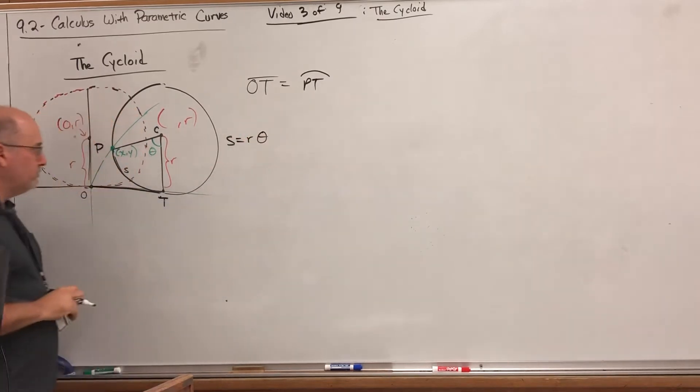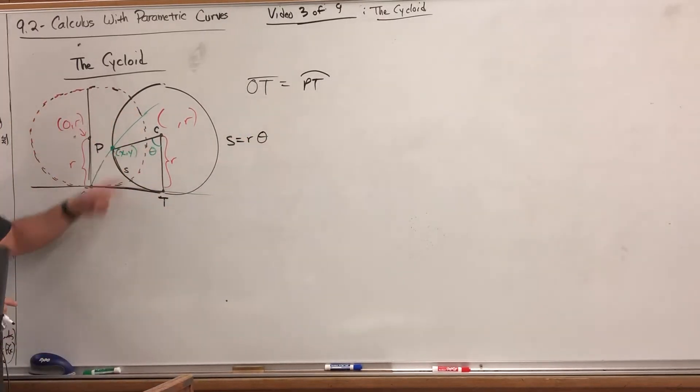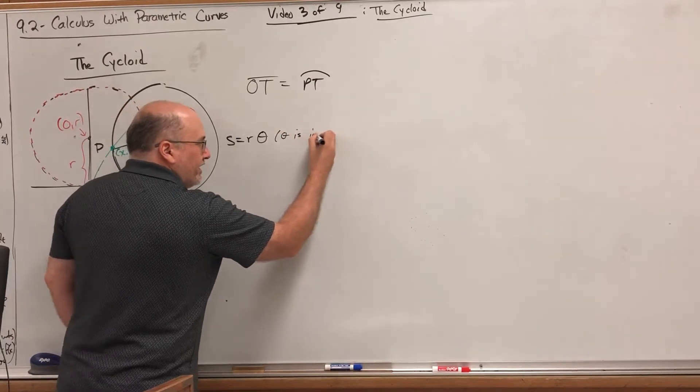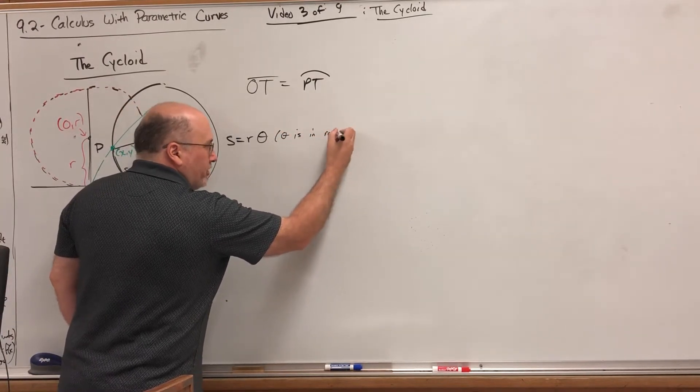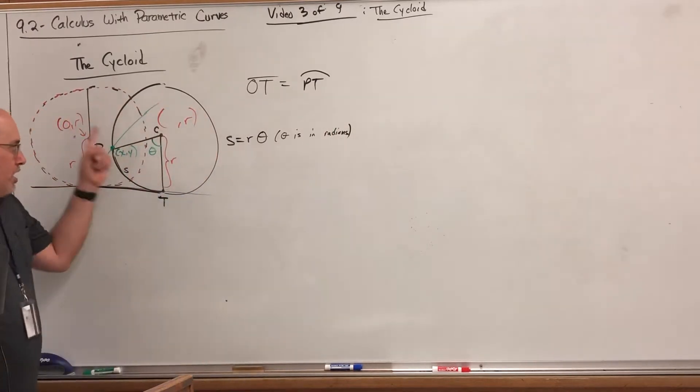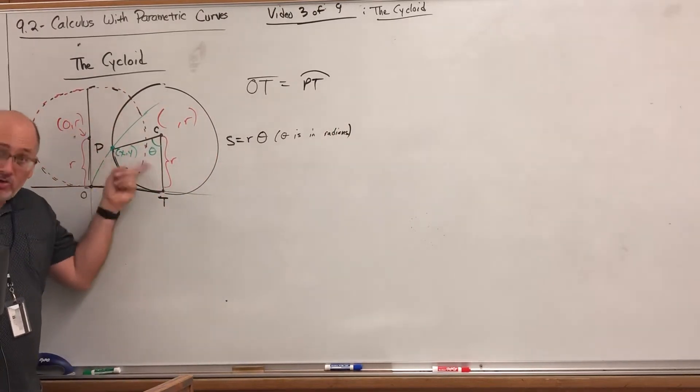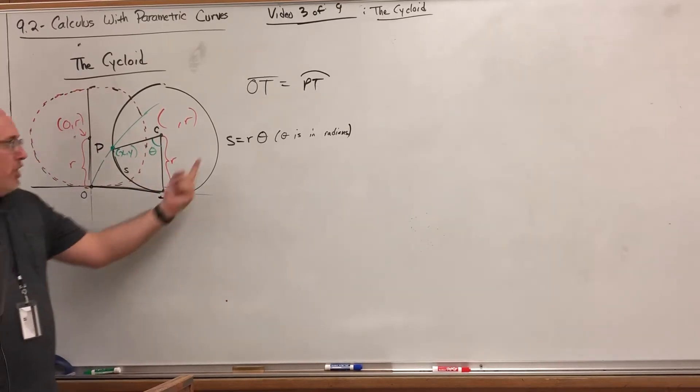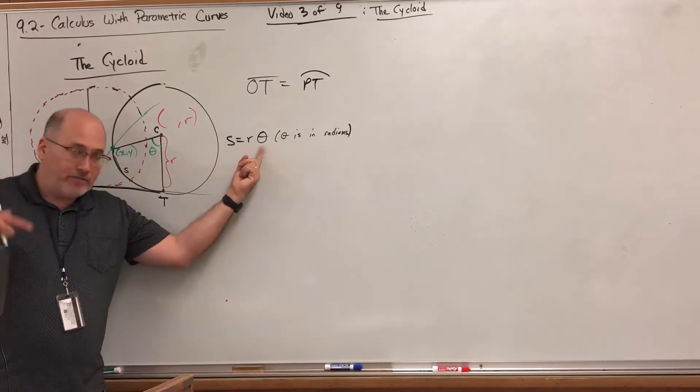We know from basic trigonometry that arc length, which I'm going to call s, is just r times theta—the radius times the angle, assuming theta is in radians. In fact, that's the definition of radians: the radian measure of a central angle in a circle is the arc length divided by the radius.